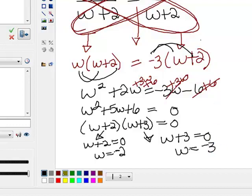And notice that the negative 2 is an extraneous solution, so we cross it out, and the only possible solution is the negative 3.